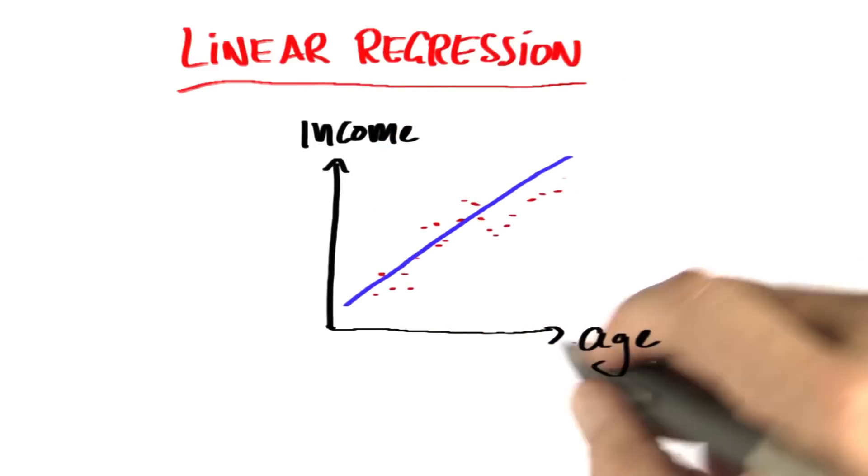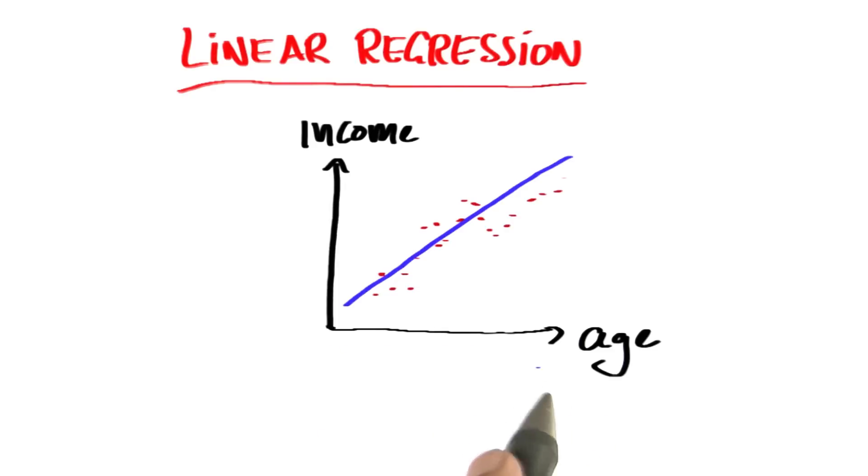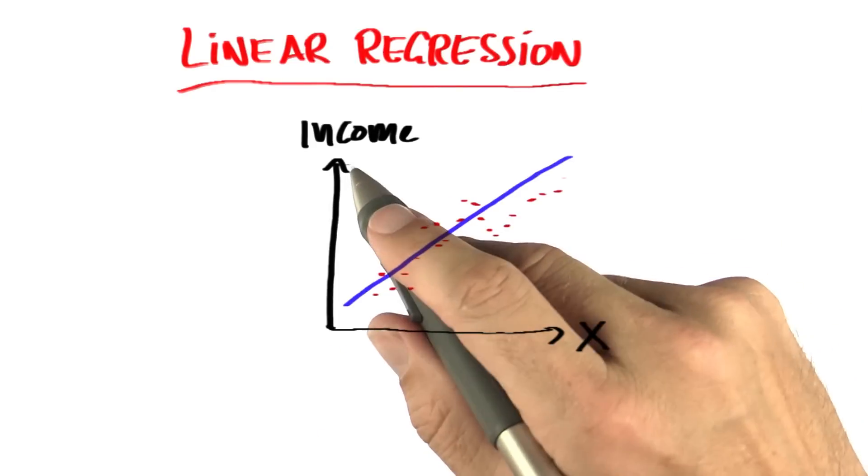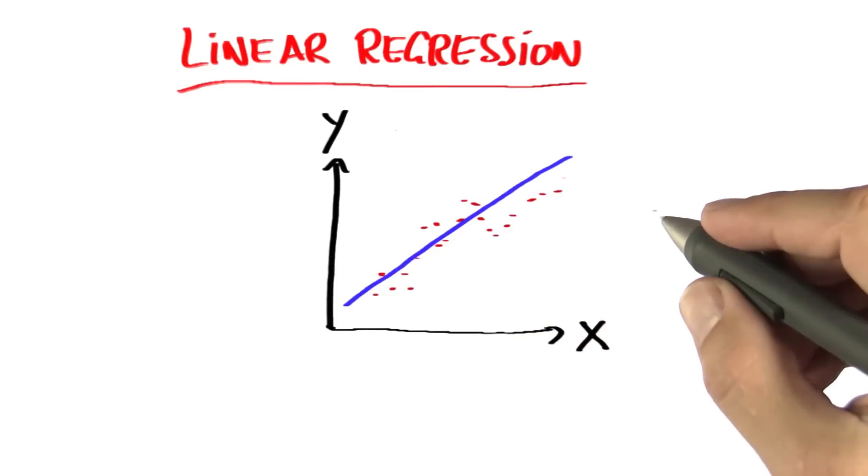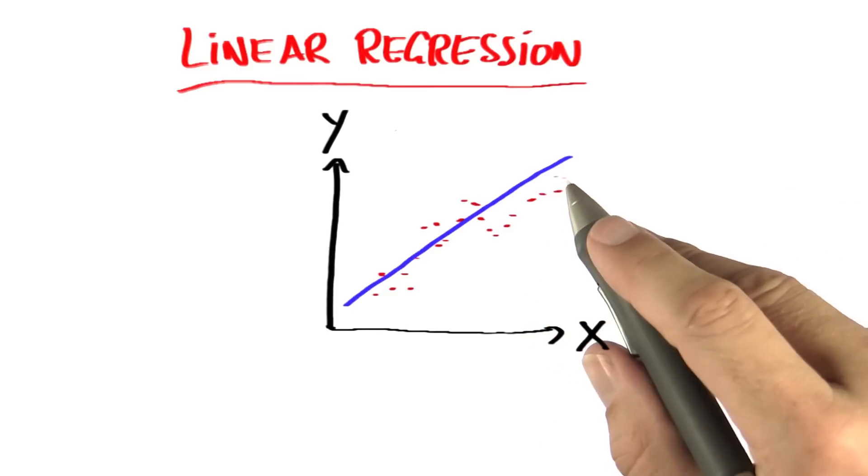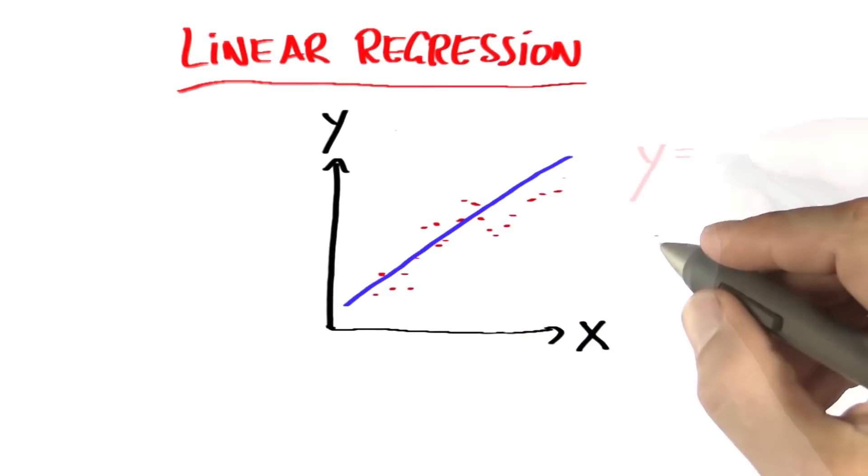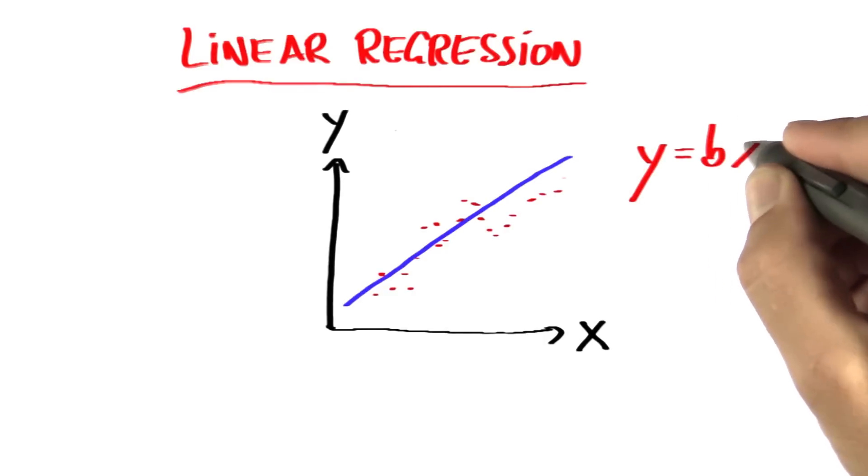So how do we specify a line? Suppose we call the horizontal axis x. And suppose we call the vertical axis y. Then a line is commonly described by a functional relationship between x and y of the following form, y equals b times x plus a.